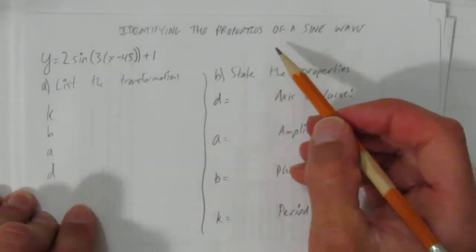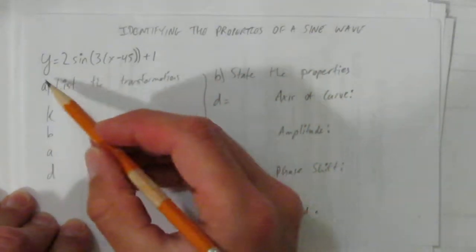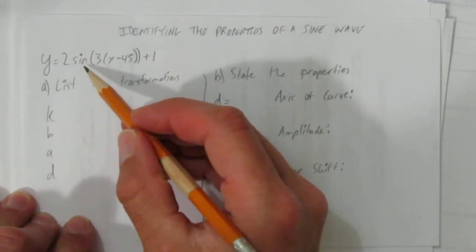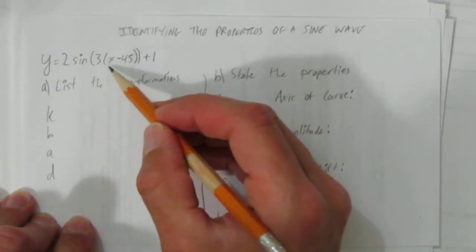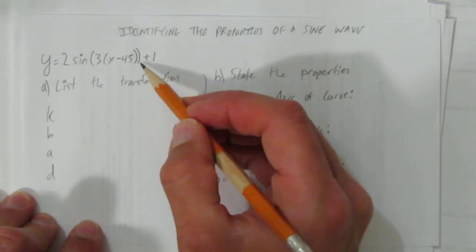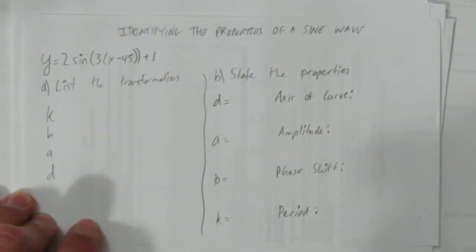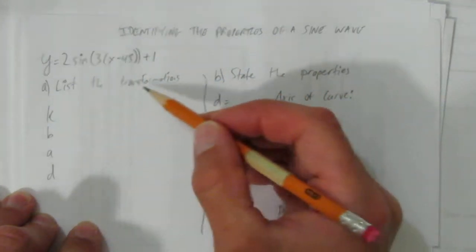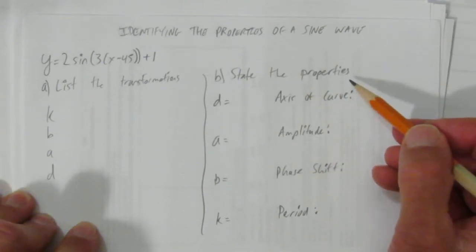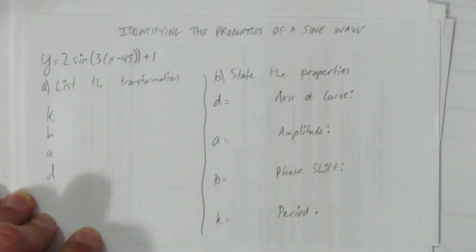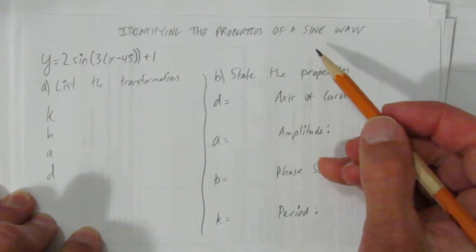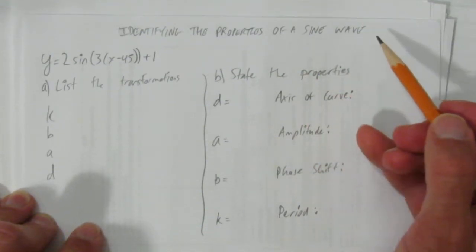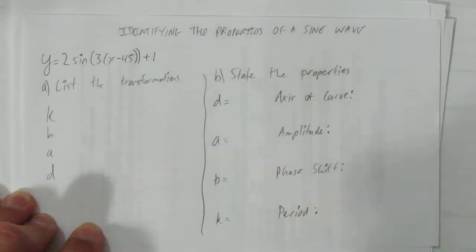This video looks at identifying the properties of a sine wave. The equation we're given is y equals 2 sine of brackets 3 brackets x minus 45 brackets plus 1. There's two types of properties we're going to look at: the transformations and then the actual properties of the sine wave. And this will work for cosine too. It's sine or cosine, anything that's a wave, a sinusoidal function, we're just going to do sine.